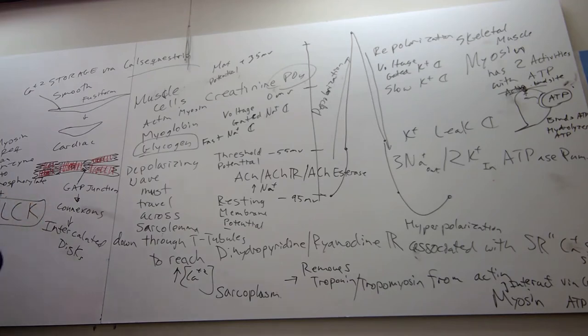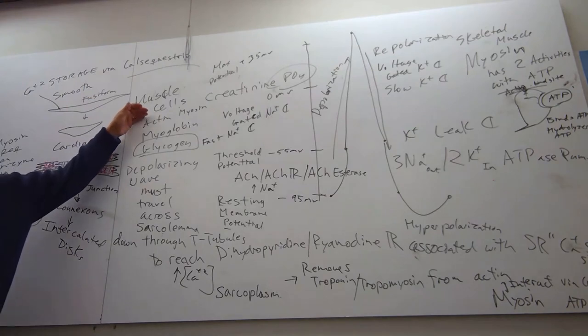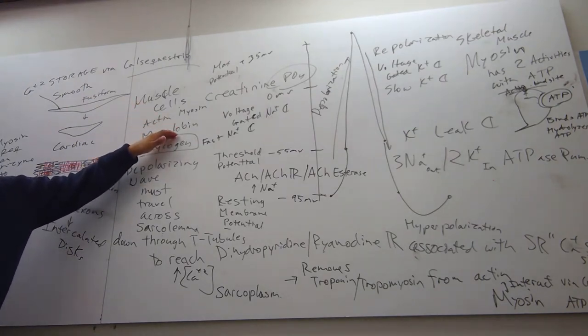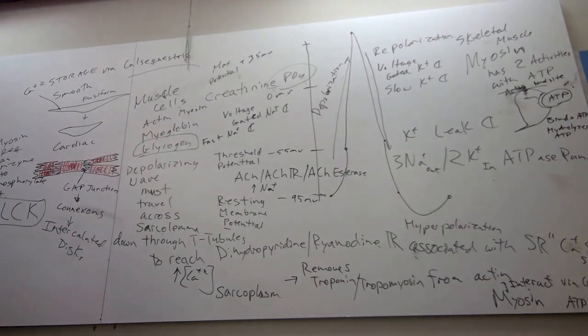Now, why is this important? If I find troponin, tropomyosin in the bloodstream, if I find myoglobin in the bloodstream, what is that clinically telling me?